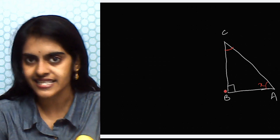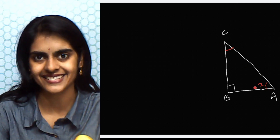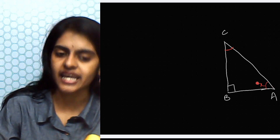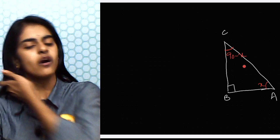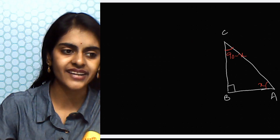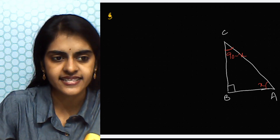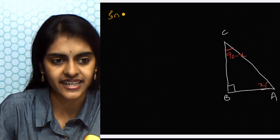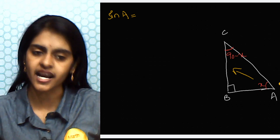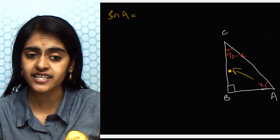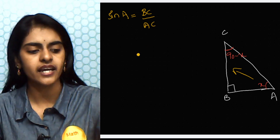Since the two non-right angles sum to 90°, they are complementary angles. If one angle is x, the other angle is 90° − x. Now let me write all the trig ratios. Sin A — sine is opposite over hypotenuse, so the opposite side of angle A is BC, giving sin A = BC/AC.